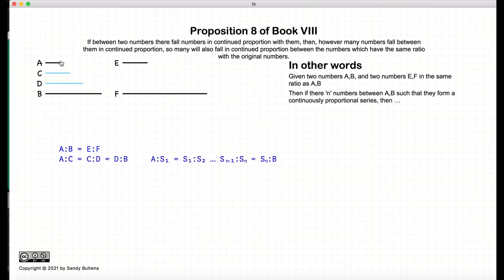and in between a and b, we have a number of numbers, in our case or example, c and d, such that they are in continuous proportions. In other words, a is to c, as c is to d, as d is to b.